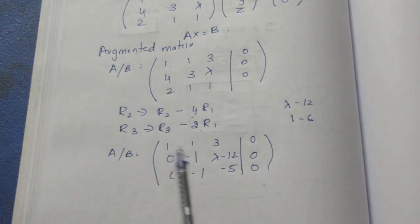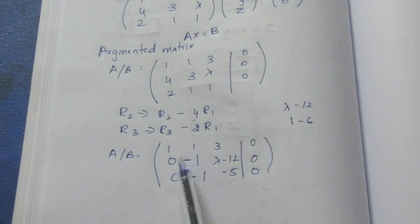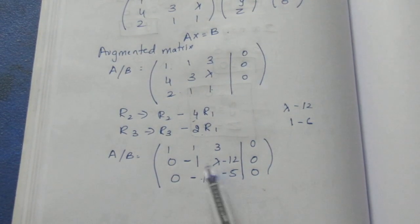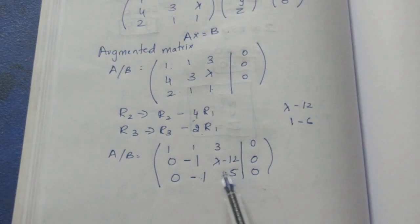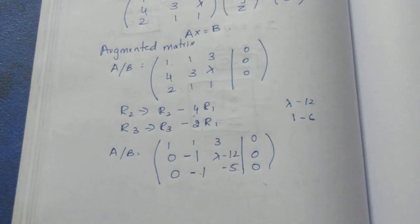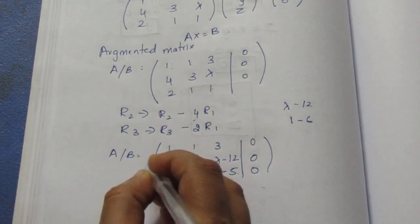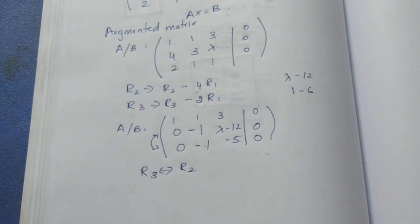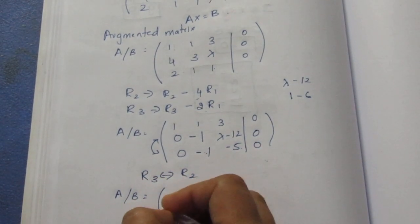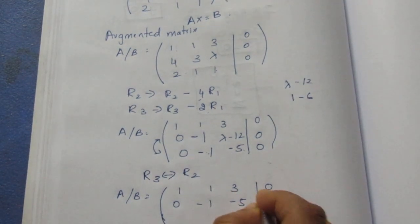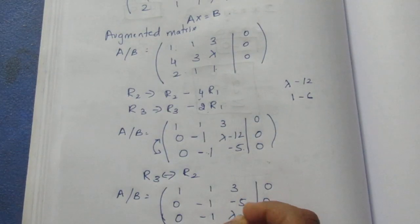There is a non-zero element. We interchange row 2 and row 3 to bring the non-zero element forward. After the interchange, the second row becomes: 0, minus 1, minus 5, 0. The third row becomes: 0, minus 1, lambda minus 12, 0.